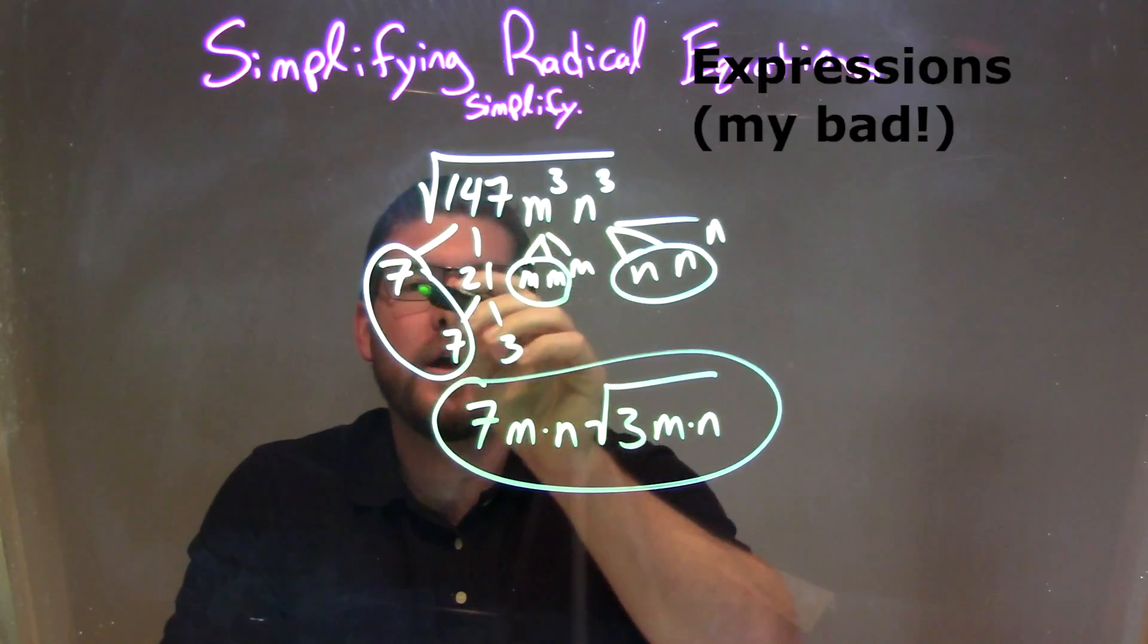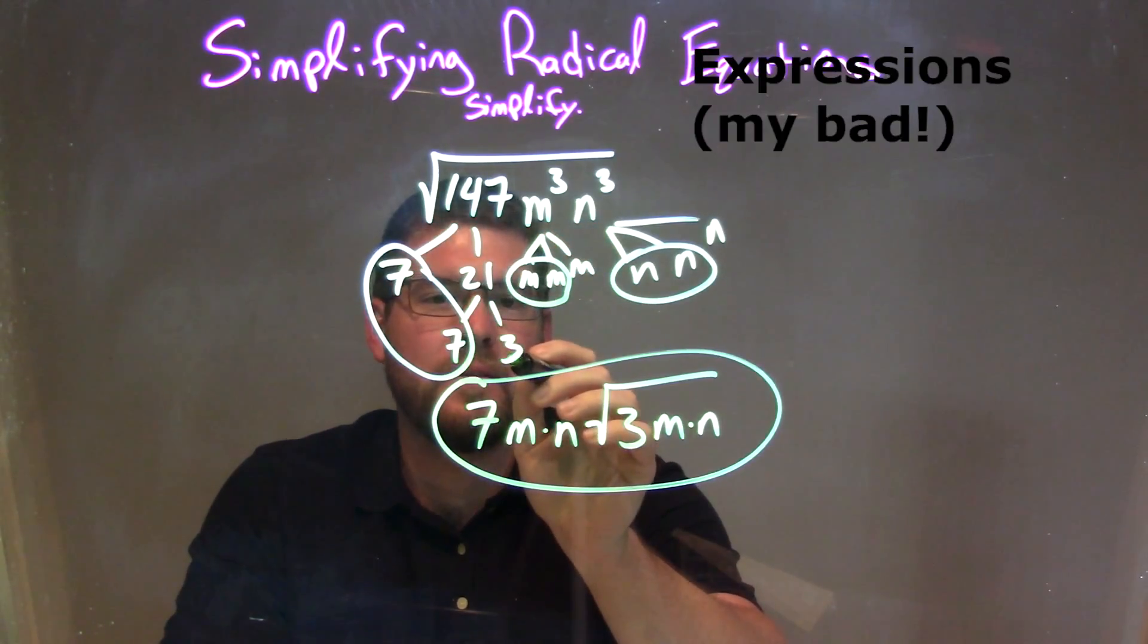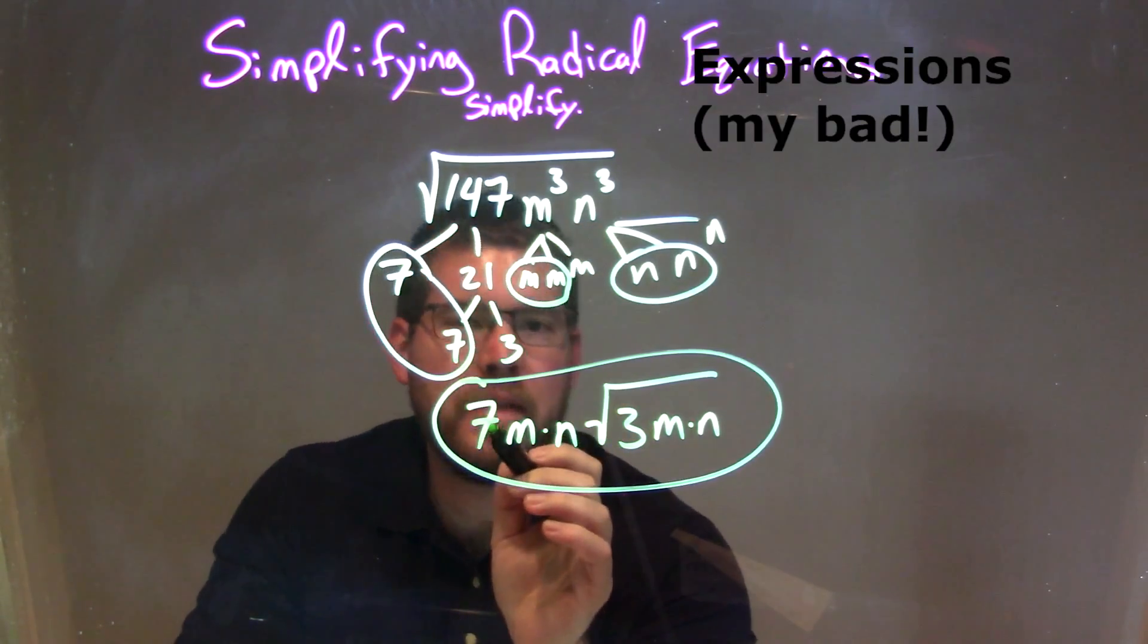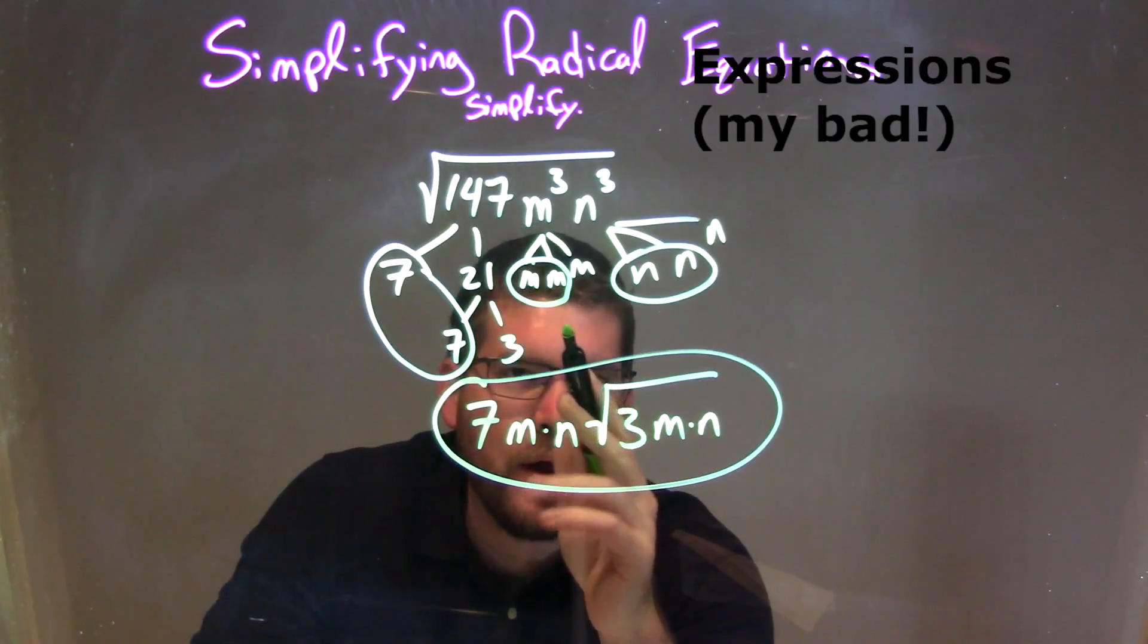Alright, so 147, we have broken out of the 7 times 7 times 3, that pair of 7s right there, 7 on the outside, 3 stayed on the inside, pair of ms, that first m came out here.